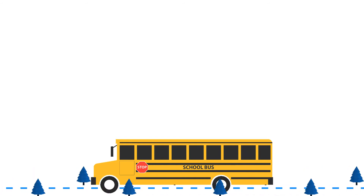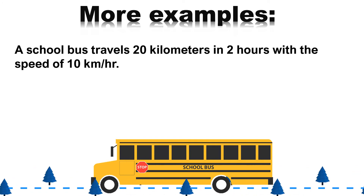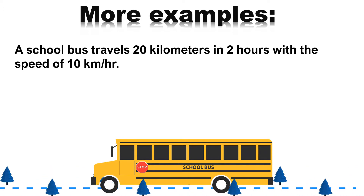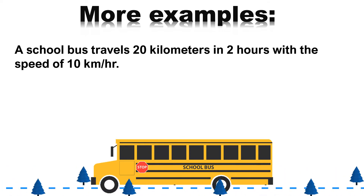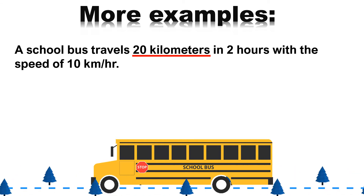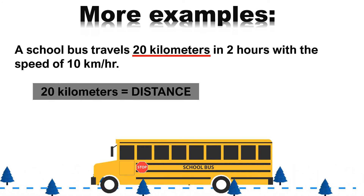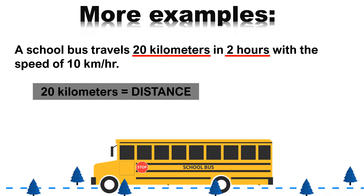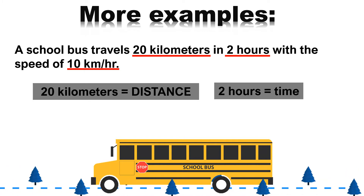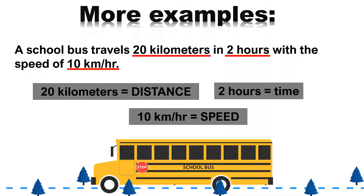Let's discuss another example. This time, let us identify the different quantities in a given situation. A school bus travels 20 kilometers in 2 hours with a speed of 10 kilometers per hour. Can you identify the different scalar quantities? Isa-isahin natin. Ang 20 kilometers ay halimbawa ng distance. Next, we have the 2 hours, which is an example of time. And lastly, the 10 kilometers per hour — this is an example of speed.